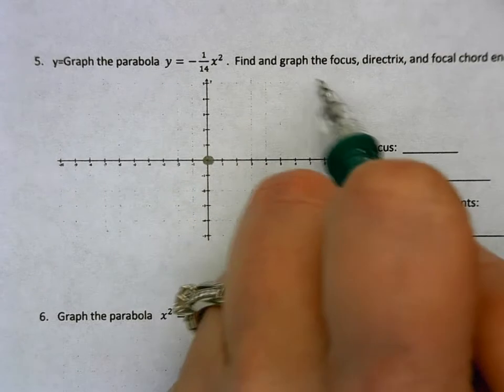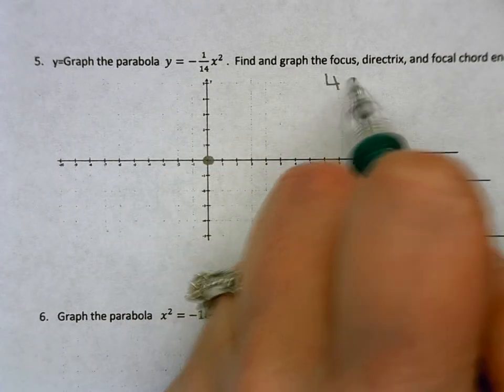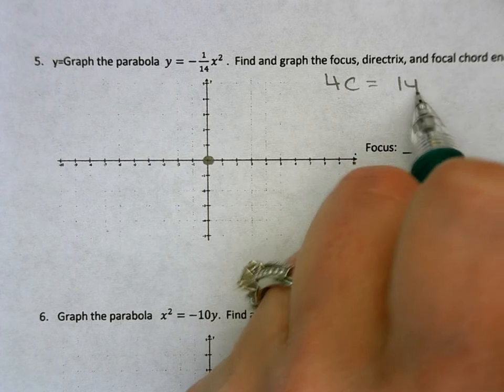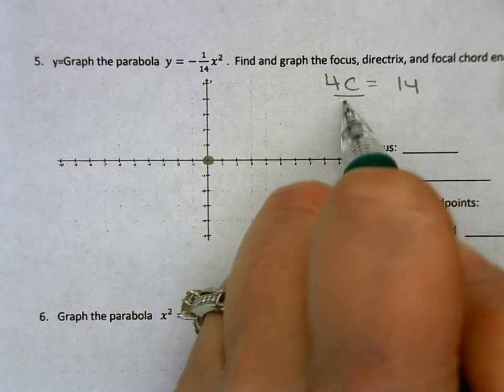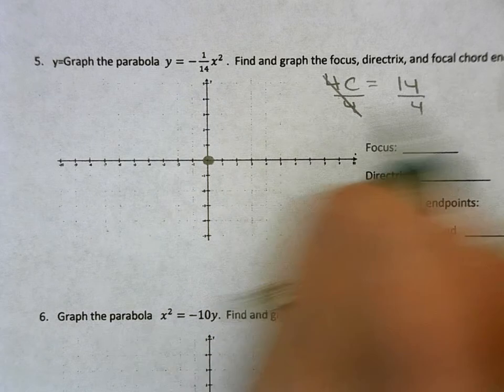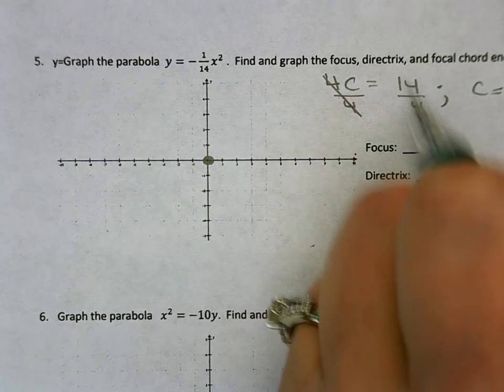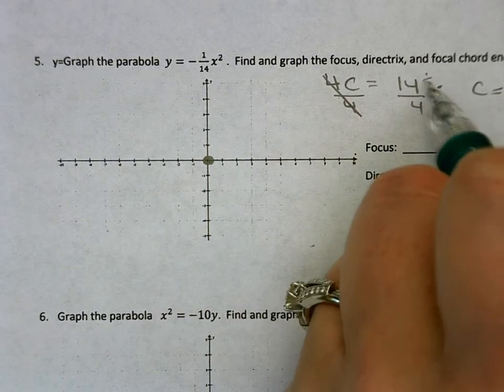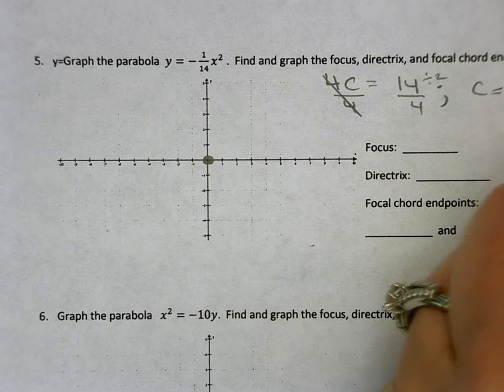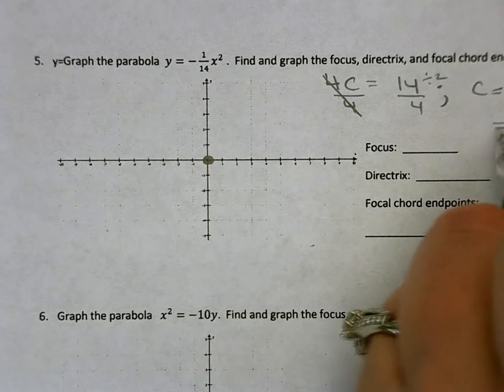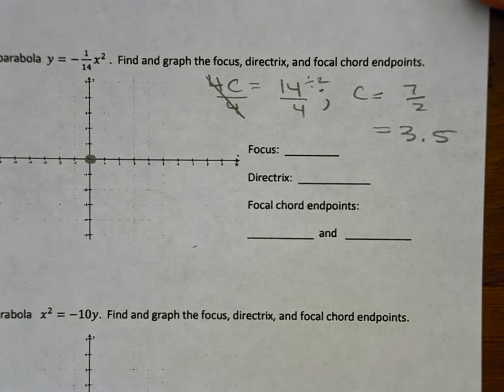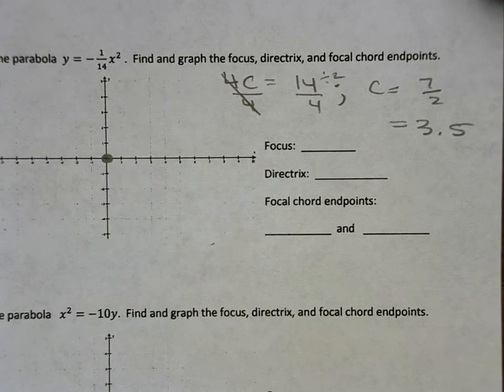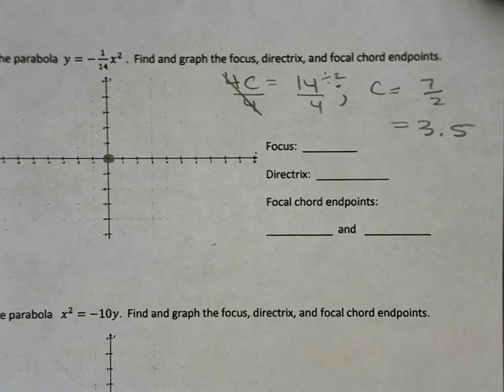So when I look at this, this is going to be always 4c. So 4c equals 14. And if you put the negative with it, it's not wrong, we just don't need to do that. So divide by 4. So then c would be 14 over 4. So I can divide out of 2. So that would be 7 over 2. And for graphing purposes, that would end up being 3.5. And 3.5 is a whole lot easier to graph than trying to figure out what the heck 7 over 2 is.